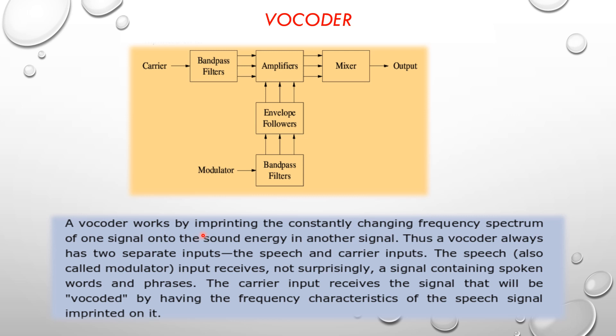A Vocoder works by impressing the constantly changing frequency spectrum of one signal onto the sound energy in another signal. Thus a Vocoder always has two separate inputs: modulator and carrier. The speech input, also called modulator, receives a signal containing spoken words. The carrier input receives the signal that will be Vocoded by having frequency characteristics of the speech signal imprinted on it.